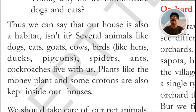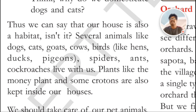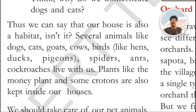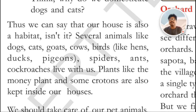We can say our house is also a habitat. Several animals like dogs, cats, cows, birds like hens, ducks, pigeons, spiders, ants, and cockroaches live with us. Plants like the money plant and crotons are also kept inside our houses. Croton plants are ornamental plants — we grow them at the edges of our compound to give beauty to our house. Money plants are grown by some people inside their houses.